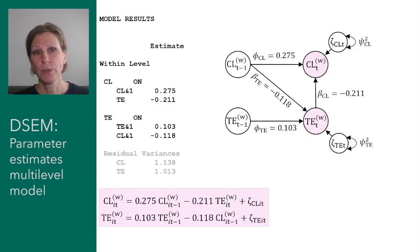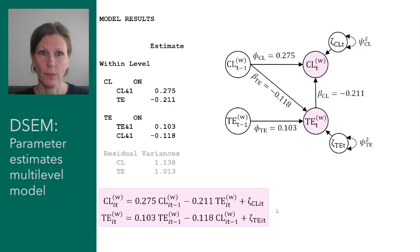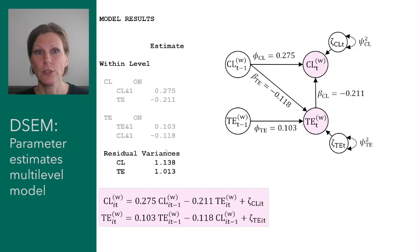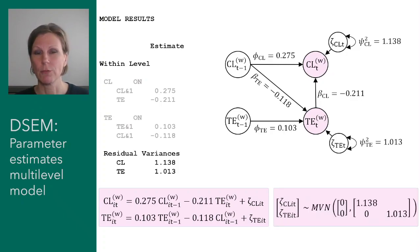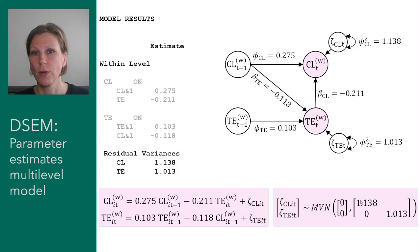Also, if they were feeling very close to their partner yesterday, they tend to experience less tension in their relationship today. These numbers can be filled into the regression equations as a different way of representing the same information. The last part of the within-level output concerns residual variances — the zetas visible in the path diagram — and we estimate their variances, which can be filled into the path diagram and added as diagonal elements of the residual covariance matrix.